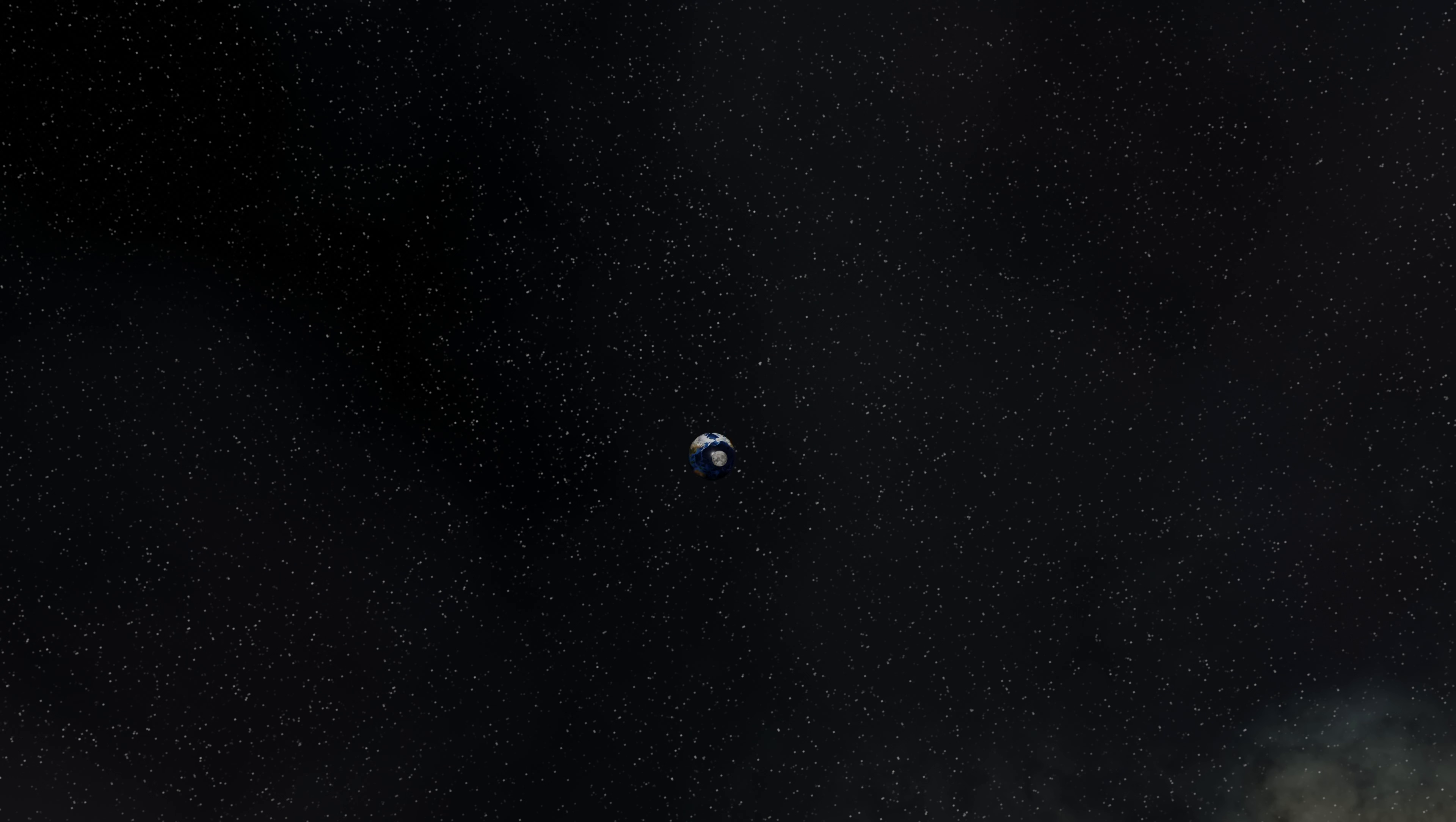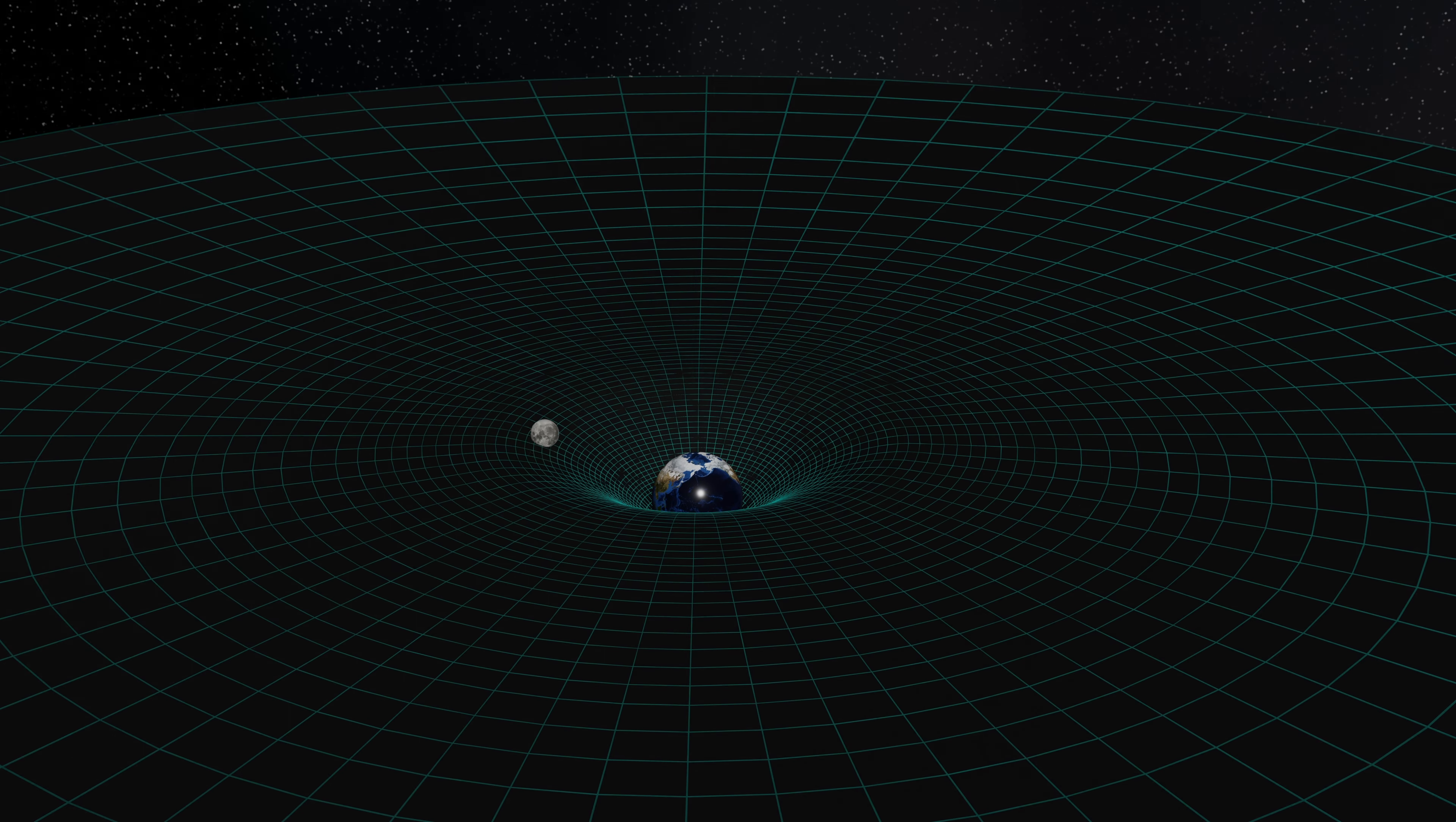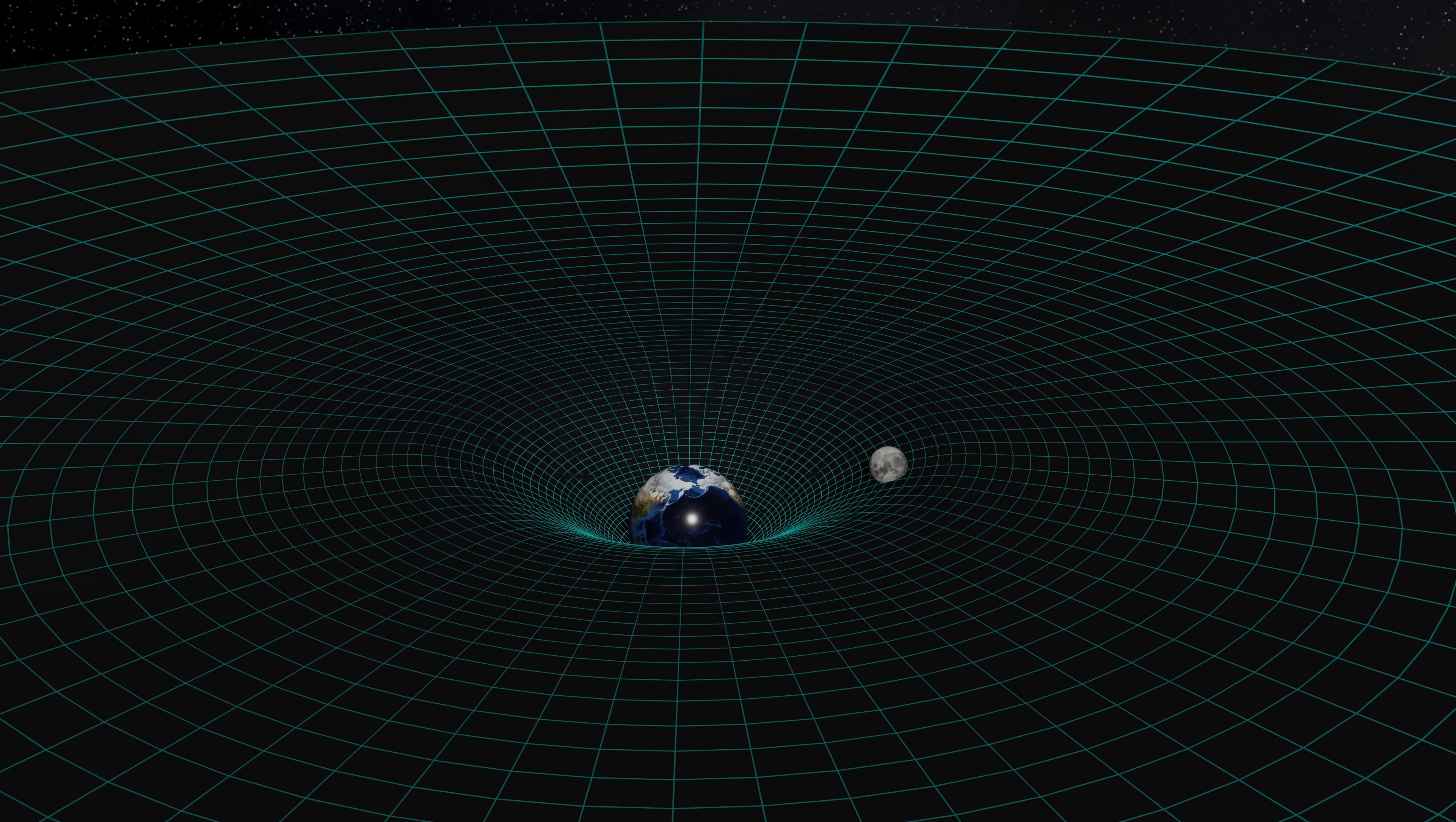But for the majority of observations and calculations, Newtonian gravity works very well indeed and could be used to predict the movement of planets and moons, all except for Mercury.